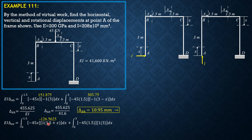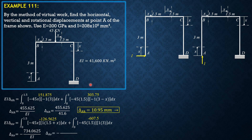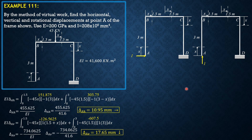The value of the first integral is negative 126.5625. The second integral is just negative 45 times 1.5 times 3 times 3, which equals negative 607.5. Combining, the vertical displacement at A is negative 734.0625 divided by 41.6. We make it positive and indicate it is downward: 17.65 mm downward.